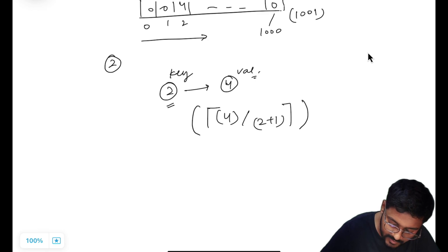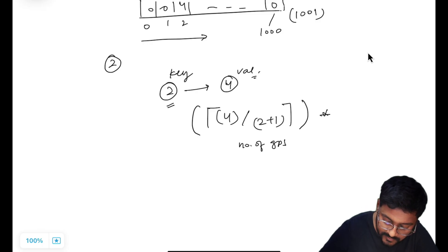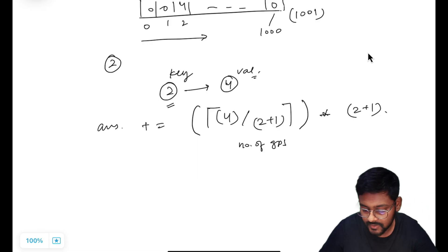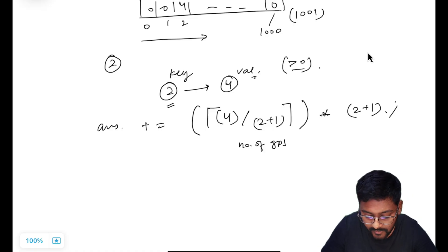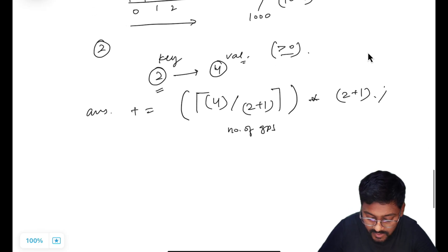That is figured out by taking ceiling of (4 / (2 + 1)). This is the number of groups. Number of groups times group size — where group size was key plus one — gives the count added to my answer.